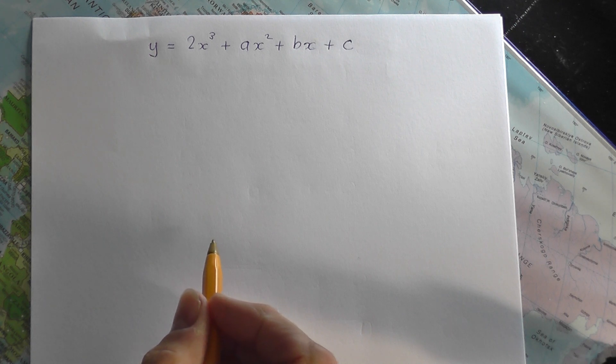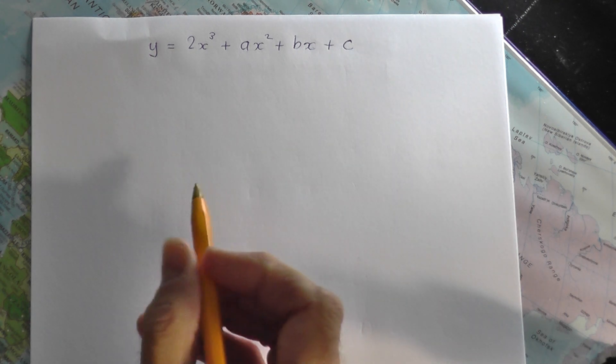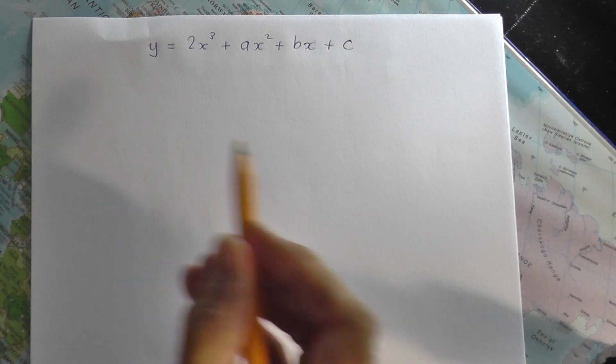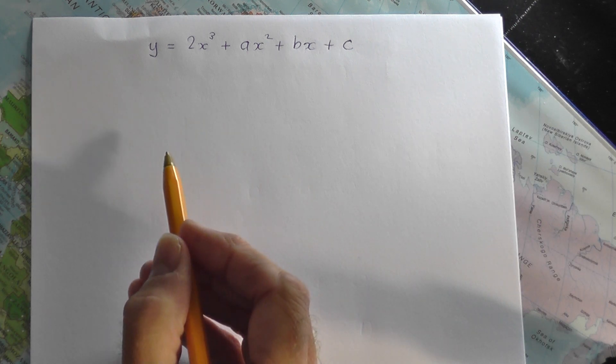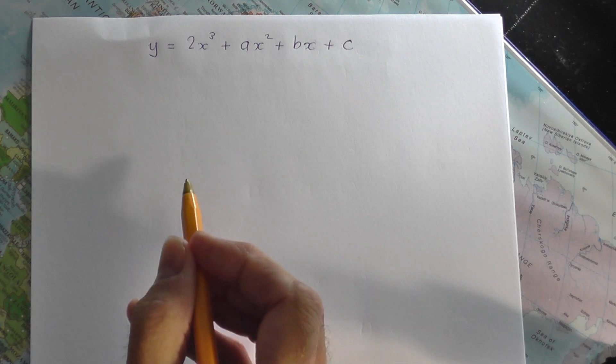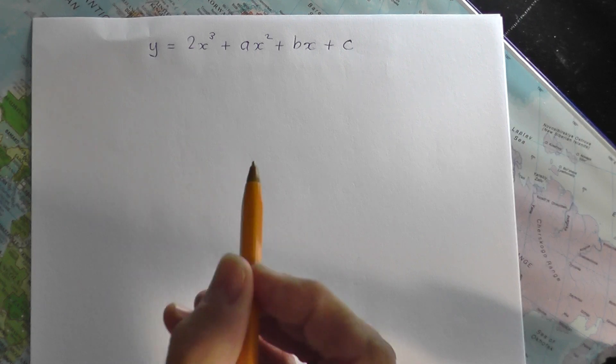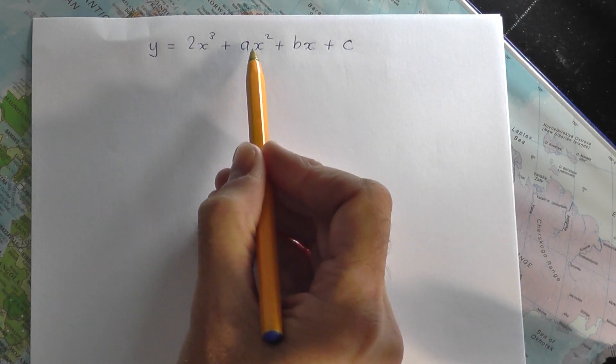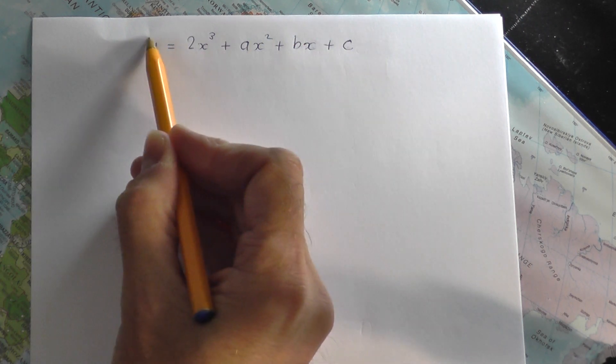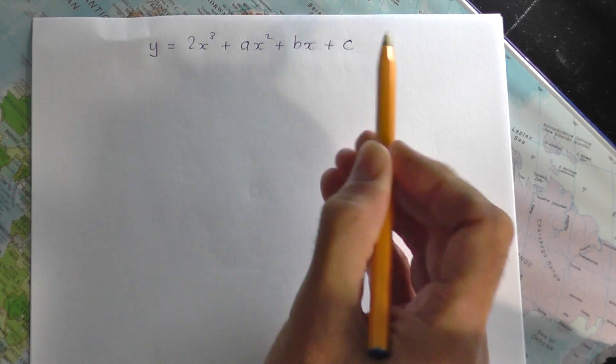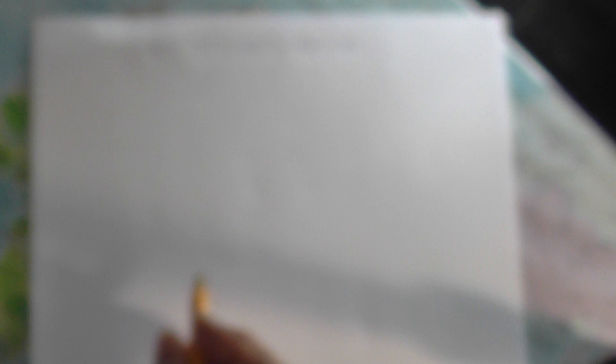And what it will be your job to do will be to take some information that they give you in terms of stationary point information or possibly point of inflection information and use that information to actually work out the values of a, b and c, which means you're actually going to go backwards and work out the starting equation of the curve.